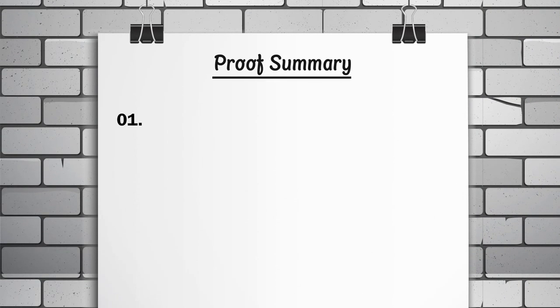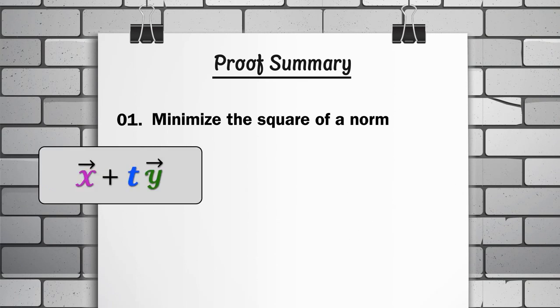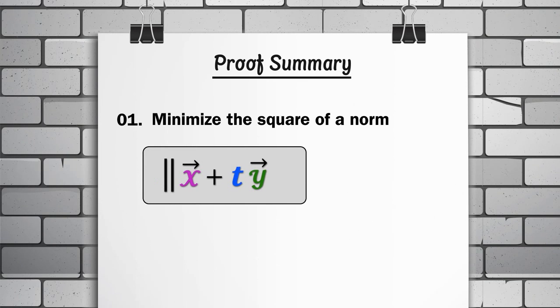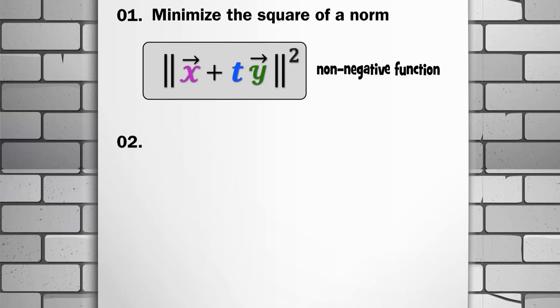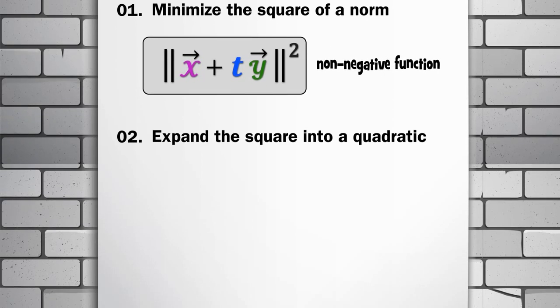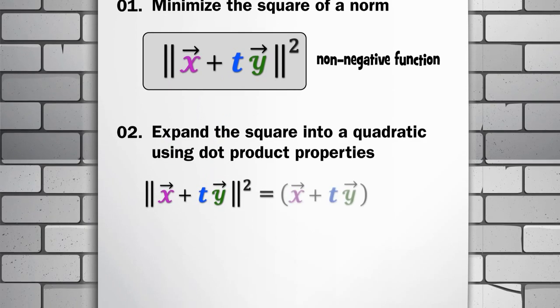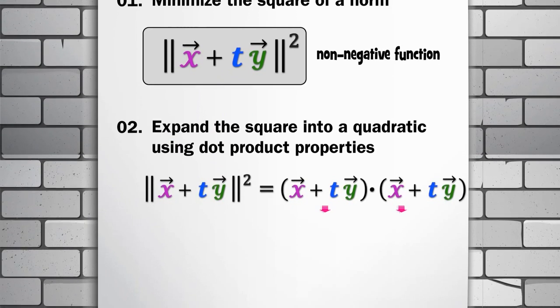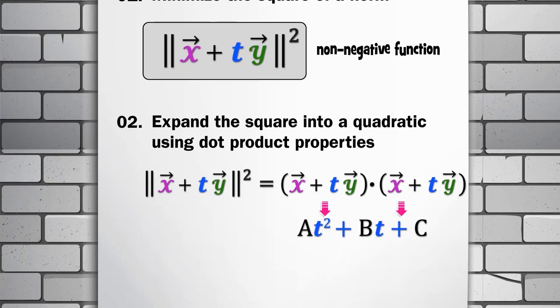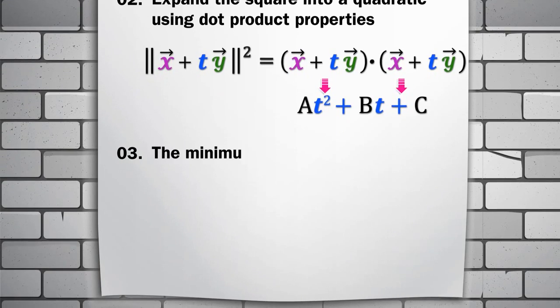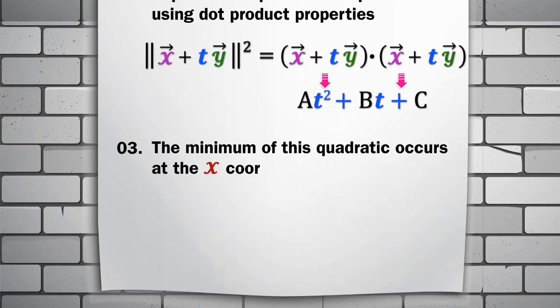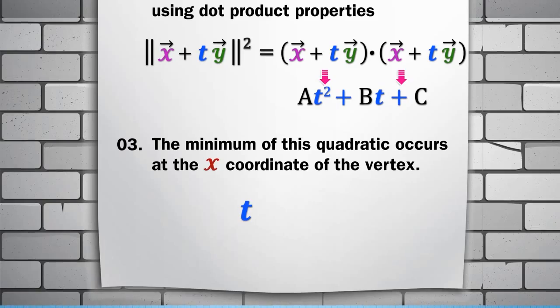To prove this, we will rewrite the problem as one in which we minimize the square of a norm. We will then expand the square into a quadratic using dot product properties. Finally, we use the fact that the minimum of this quadratic occurs at the x coordinate of the vertex.